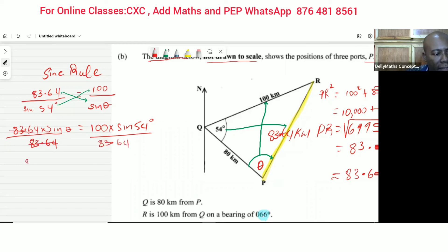Now we could simply divide both sides by 83.64. And when we do that we are saying that the sine of the angle that we want to find is equal to 100 times the sine of 54 divided by 83.64. So the sine of the angle that I want to find is 0.9673. So if I want to find the angle, I'd have to do arc sine or sine inverse 0.9673 and it's going to give me that angle.